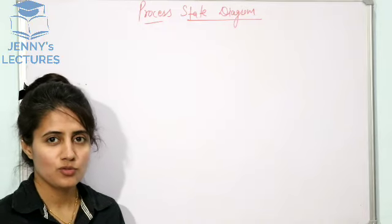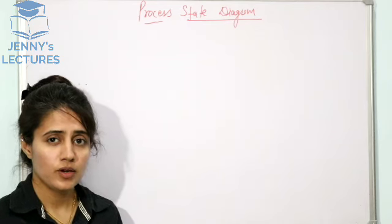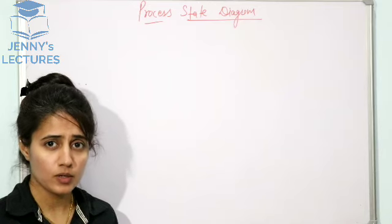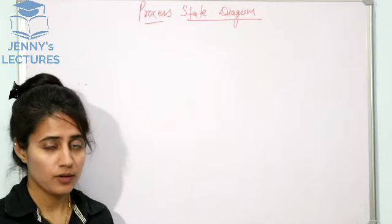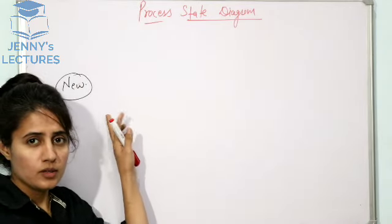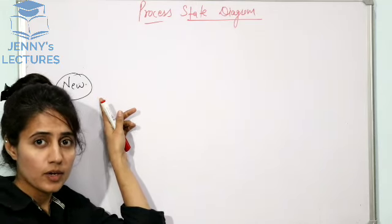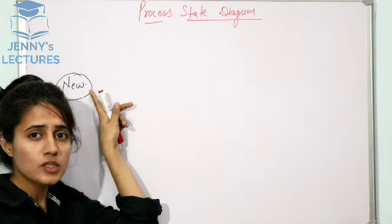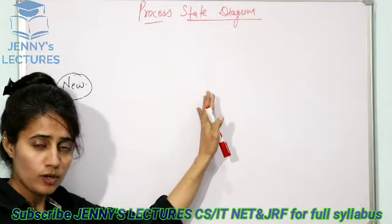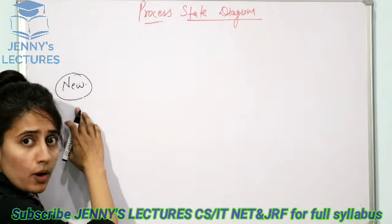In this video, we are going to discuss the process state transition diagram. Mainly everywhere you will find a five-state transition diagram: new, ready, running, waiting, and terminated. We'll also discuss two more states and the different types of schedulers. The very first state is 'new' — if a process is in the new state, it doesn't mean it has been created. We can say it is a program in secondary memory that will be picked by the OS and put into main memory.